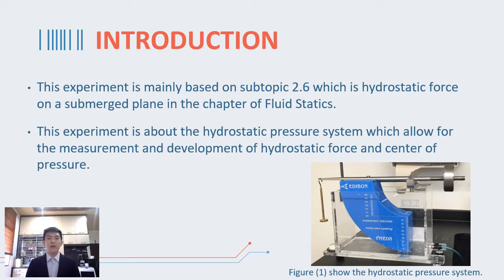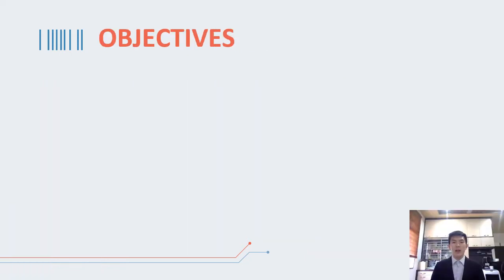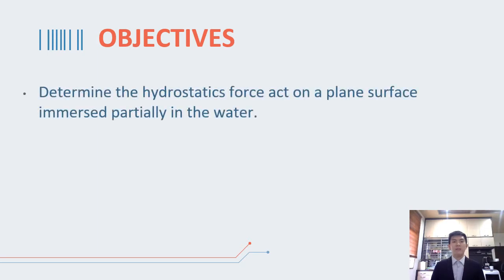A fluid in this condition is known as a hydrostatic fluid. Thus, a hydrostatic pressure apparatus has been designed to study the hydrostatic force on an object. The objective of this lab is to determine the hydrostatic force acting on the plane surface when the surface is partially submerged.